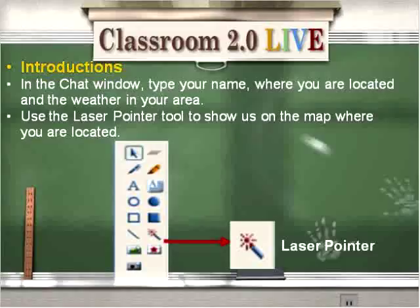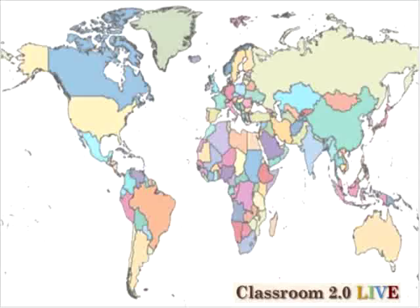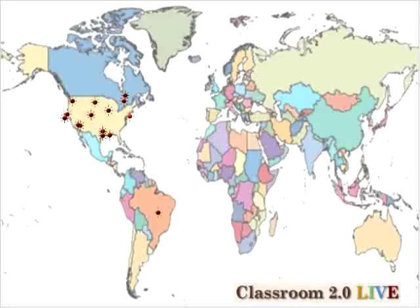The next slide talks about the introductions we're going to do using the laser pointer. The laser pointer tool is the wand — the little blue wand with the red sunburst style at the end. If everybody could please click on that blue wand with the sunburst and click on your location on the world map. You may need to drag your little sunburst a bit to the right, as it tends to move to the left.